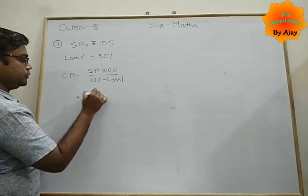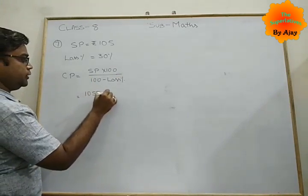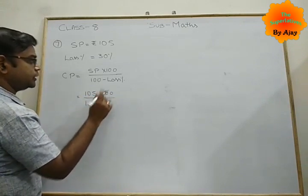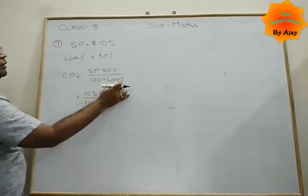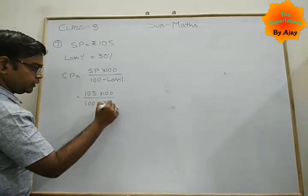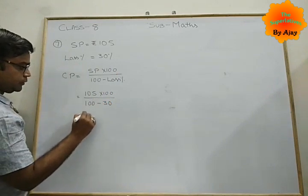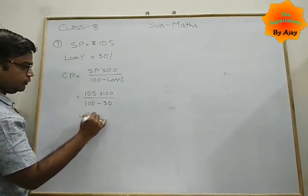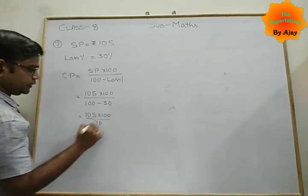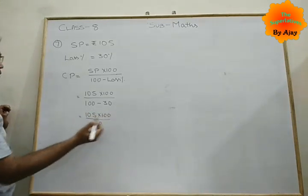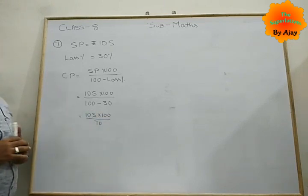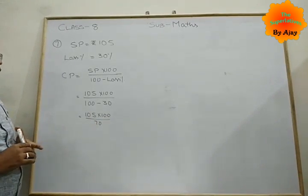SP is given, 105 into 100 minus loss percent. We need to subtract 30%. We only write the numeric part, only 30. So 105 into 100 by 70. This is your cost price for one basket of mangoes.